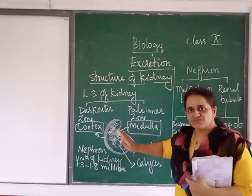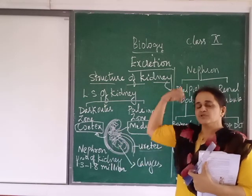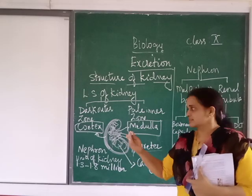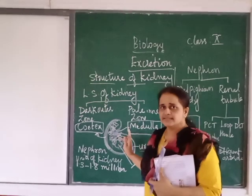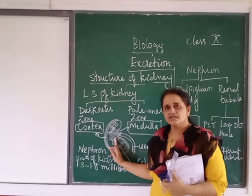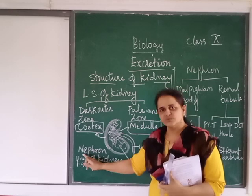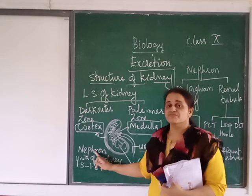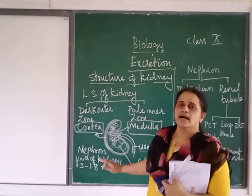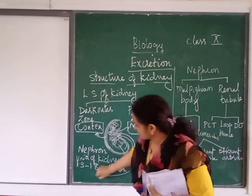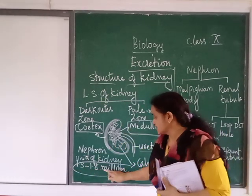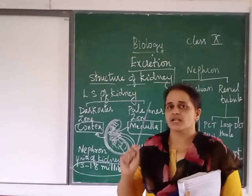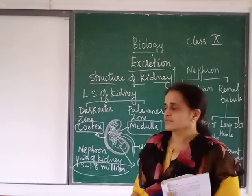In that system, we are studying the structure of the kidney. Then we will go to the ureter, then the urinary bladder, and lastly urethra. Each kidney consists of many units called nephrons — also known as uriniferous tubules. The number of nephrons is 1.3 to 1.8 million. Nephrons are the structural and functional units of the kidney.